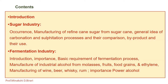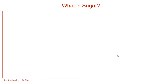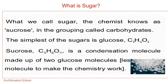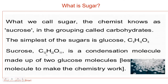First of all, what is sugar? What we call sugar, the chemist knows as sucrose, in the grouping called carbohydrates. Carbohydrates means hydrate of carbon — that is, compounds which contain carbon, hydrogen, and oxygen. The simplest of the sugars is glucose, having molecular formula C₆H₁₂O₆. Sucrose has molecular formula C₁₂H₂₂O₁₁.